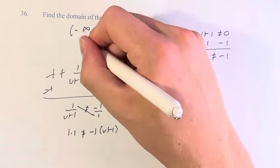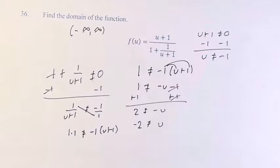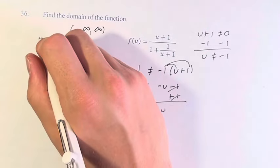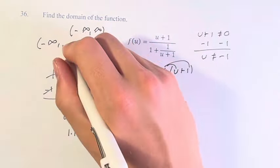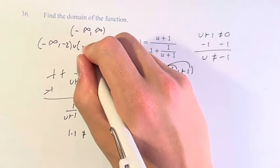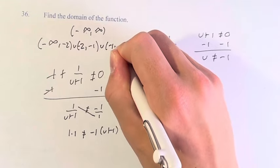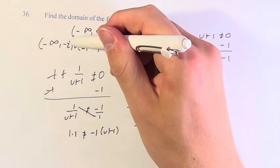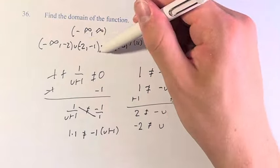So we have all real numbers except u ≠ -1 and u ≠ -2. We can write this in interval form as (-∞, -2) union (-2, -1) union (-1, ∞). We use open brackets because we are not including -2 or -1.